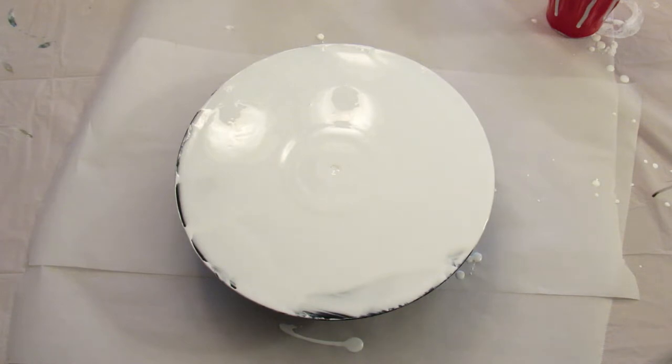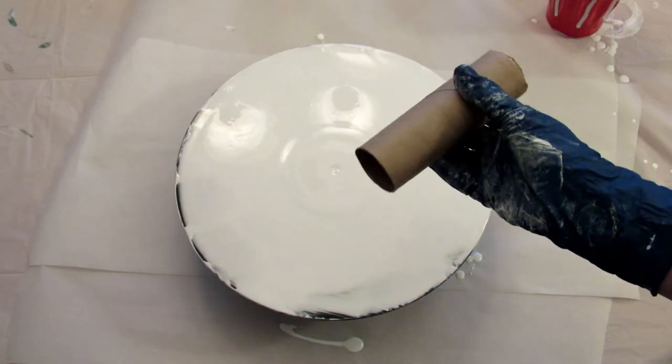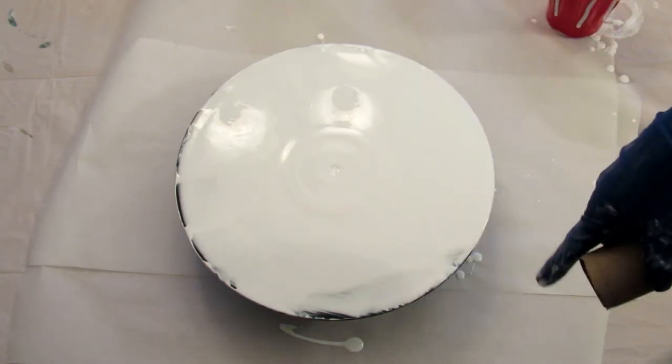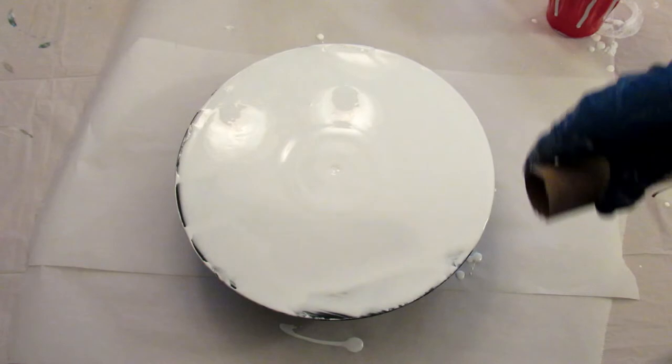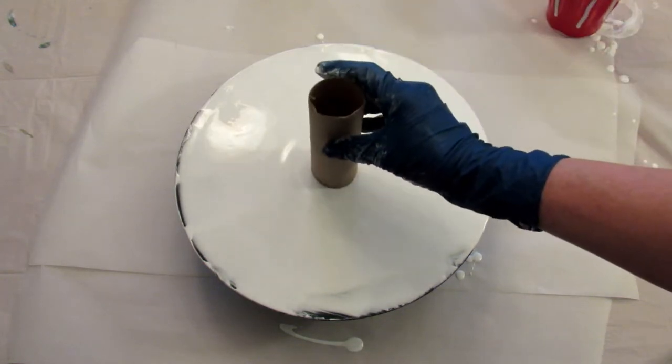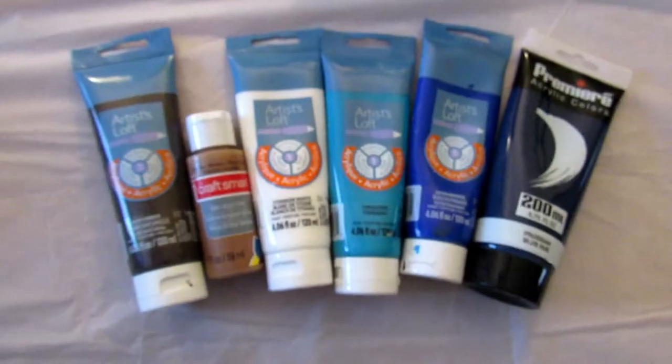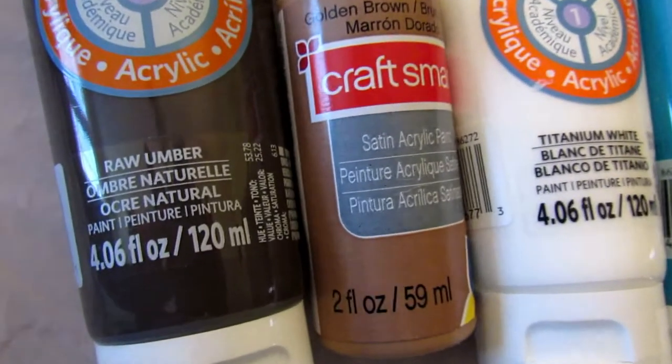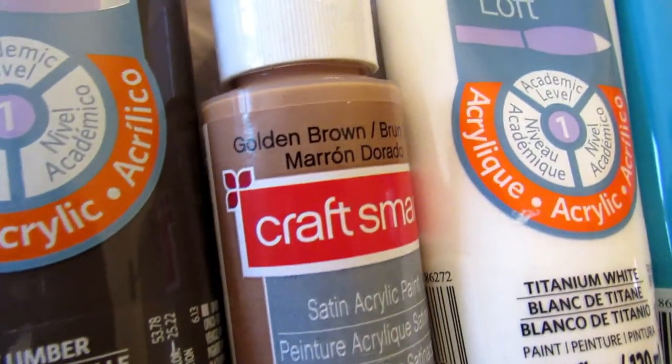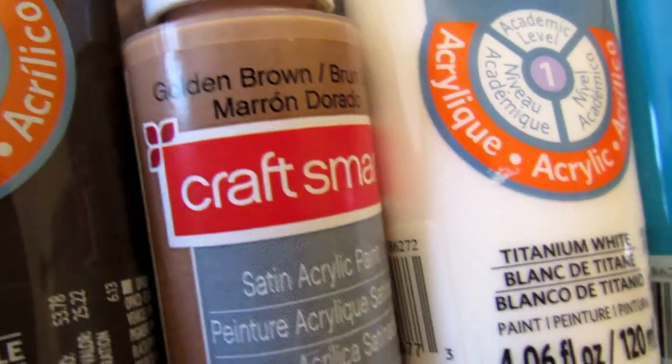So today I'm gonna do a tube pour, a toilet paper tube or paper towel tube, and I already put down a base coat of white. I'm gonna stick that in the center and quickly I'm gonna show you the colors I'm using in this pour. All of these colors are mixed with Floetrol, a little bit of Mod Podge gloss, and water.